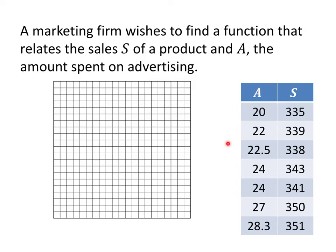The company varies the amount of advertising money they spend, and what they notice is that generally if they spend less, they make less sales, and if they spend more, they make more sales. But what they really like is to find an actual relationship that helps them make predictions and decisions. We're going to try to find a linear model that fits these data points. We know how to find a linear model given two data points, but here we have seven. So we'll plot all seven points and try to see which two would make the best fit line.